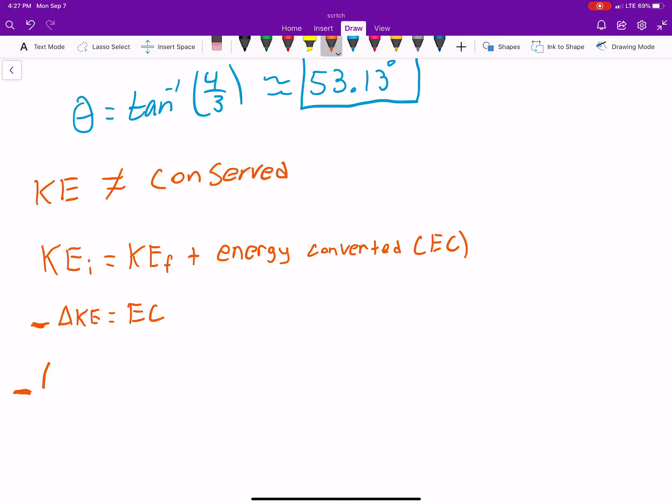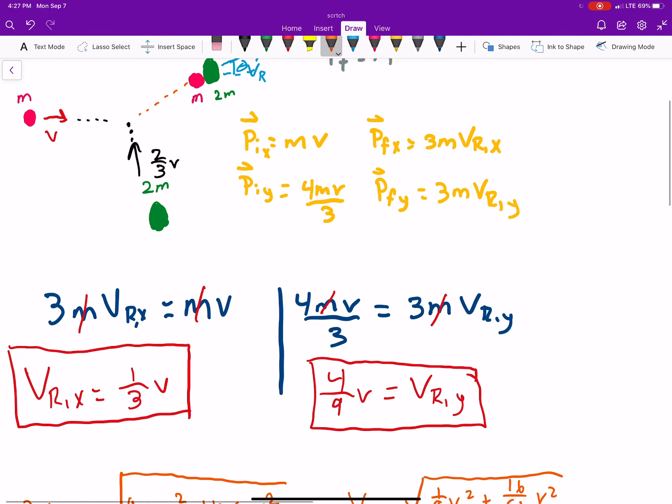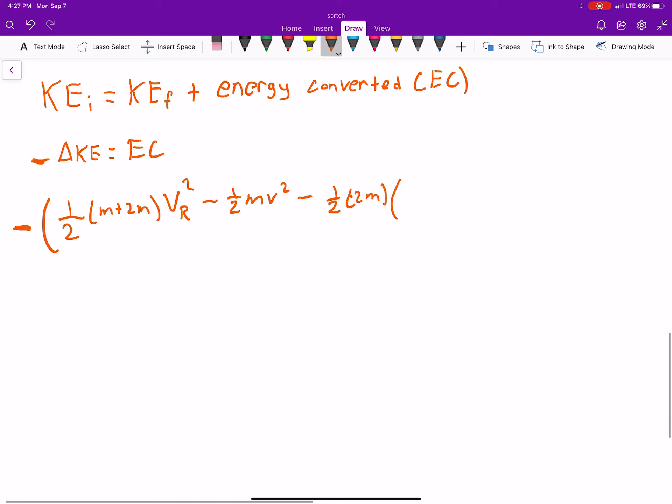Or, negative, 1/2 m final, so that'll be m plus 2m, the resulting velocity squared, which we now know, minus, what kinetic energy initial did we have? We had, 1/2 mv squared. Minus, 1/2 times 2m, so this is the one going straight up, and then, how fast was it going? 2/3 v squared.